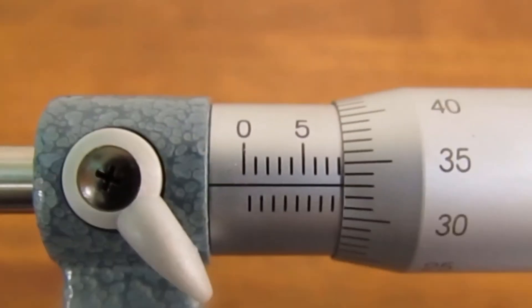Let's take a closer look at the sleeve scale. You will notice that there are two sets of marks and a line. The marks above the line are millimeters. The marks below the lines are half millimeters.